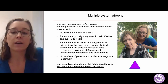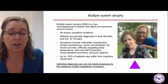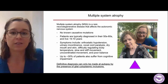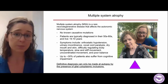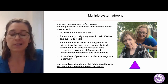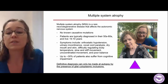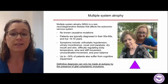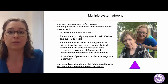A little bit more background on multiple system atrophy, or MSA, as I'll refer to it throughout the rest of this talk. It's a rare neurodegenerative disease that affects the autonomic nervous system. There are no known causative mutations that lead to the development of this disease. Patients are typically diagnosed in their 50s to 60s and live six to ten years after diagnosis. Symptoms can include orthostatic hypotension, vocal cord paralysis, difficulty regulating body temperature, poor balance, and uncoordinated movement. Up to 30% of patients also suffer from cognitive impairment.